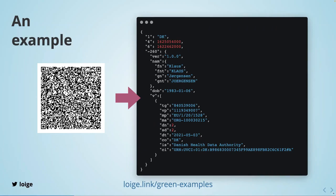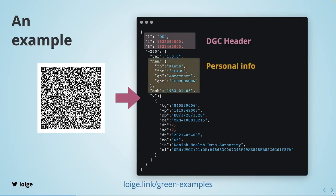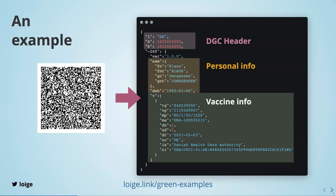We're going to figure out how to go from what you see on the left — a QR code — to what you see on the right, which is structured readable data. There is a DGC header containing the issuer (DK means Denmark), a couple of dates for when it was issued and when it expires, then personal information, and finally an array of certificates. In this particular case it's a vaccination certificate, so you get all the information related to a vaccination proof.